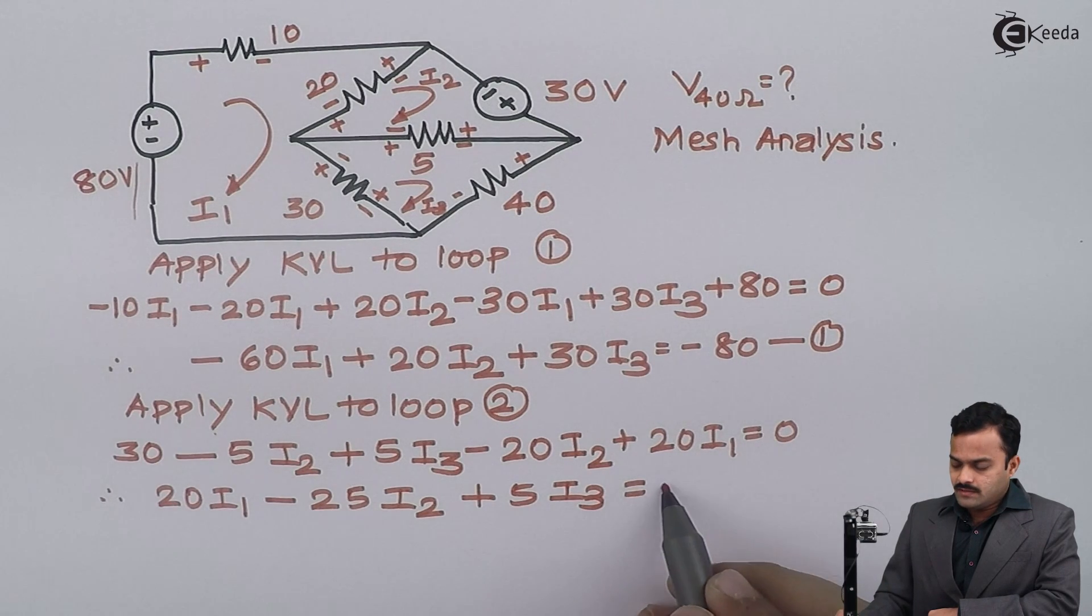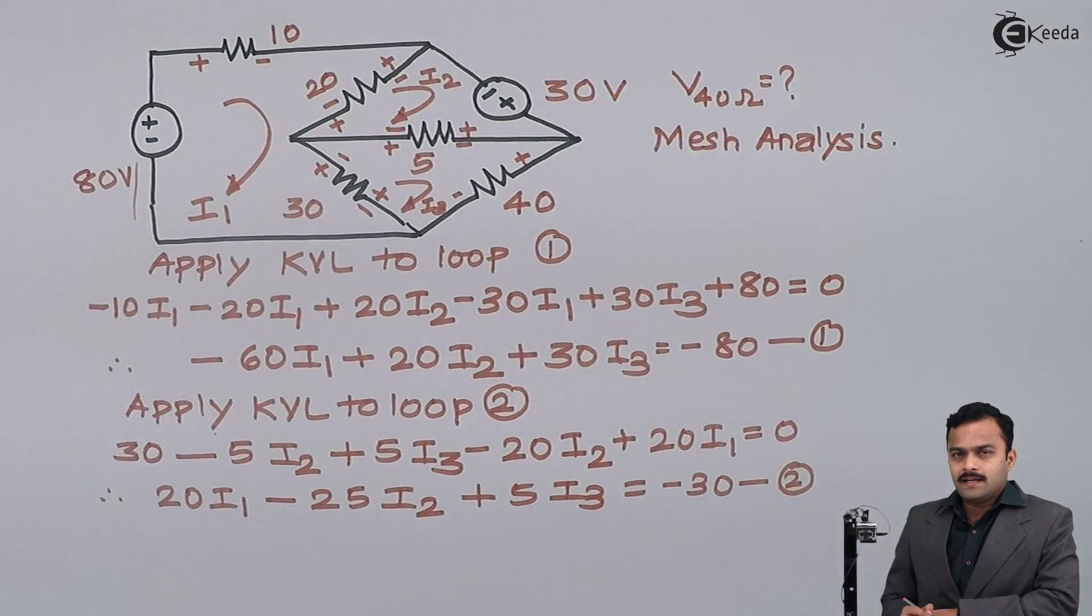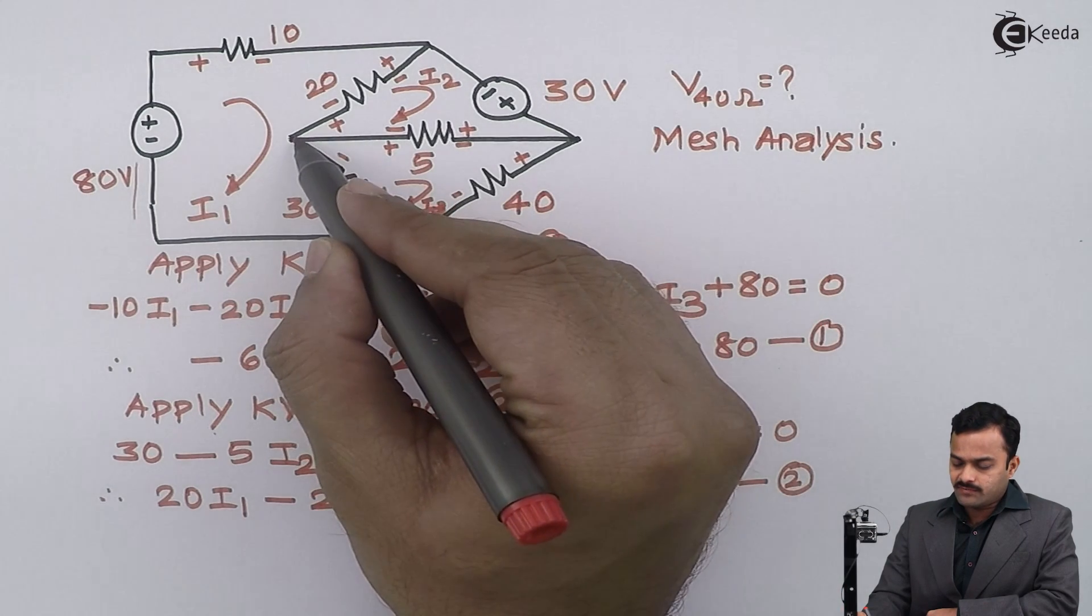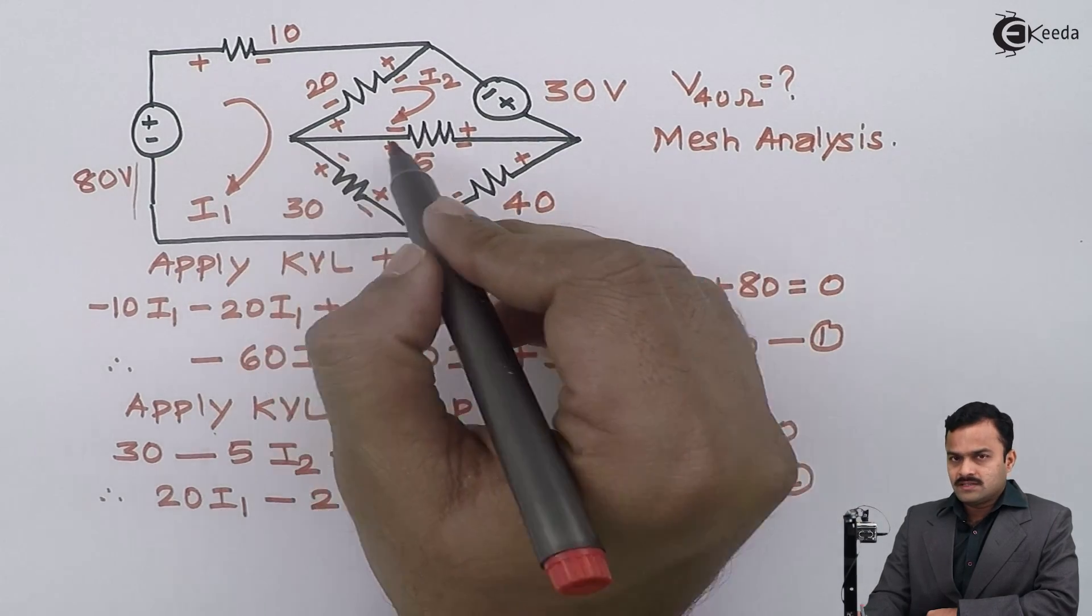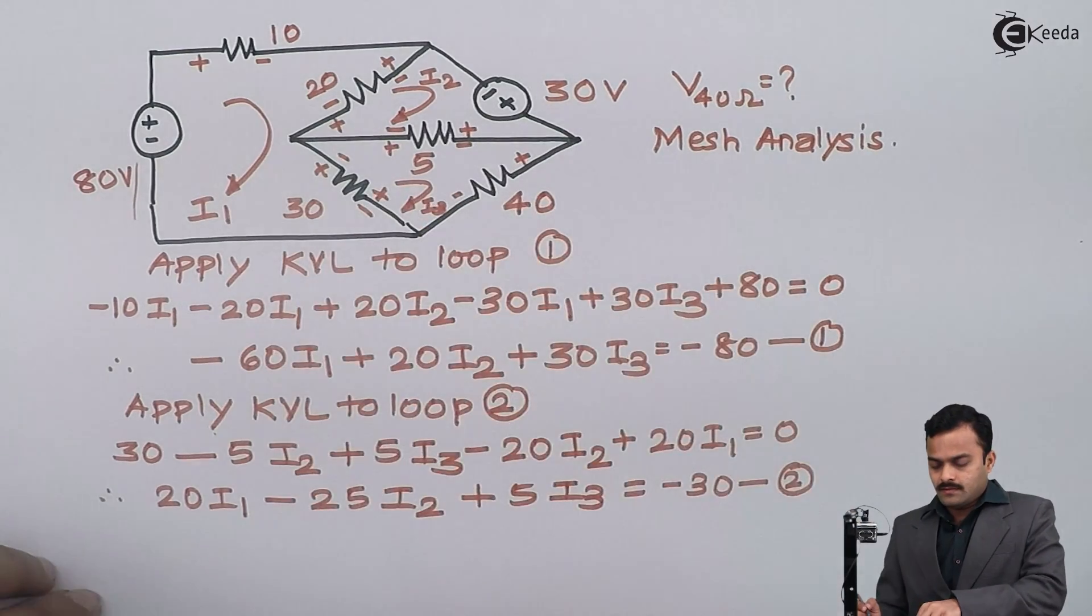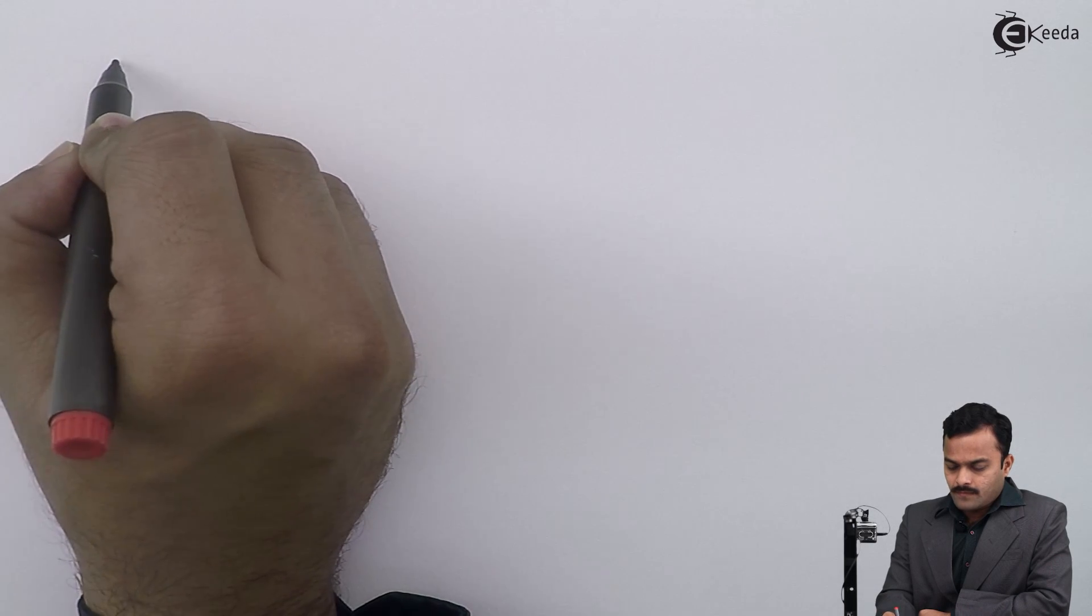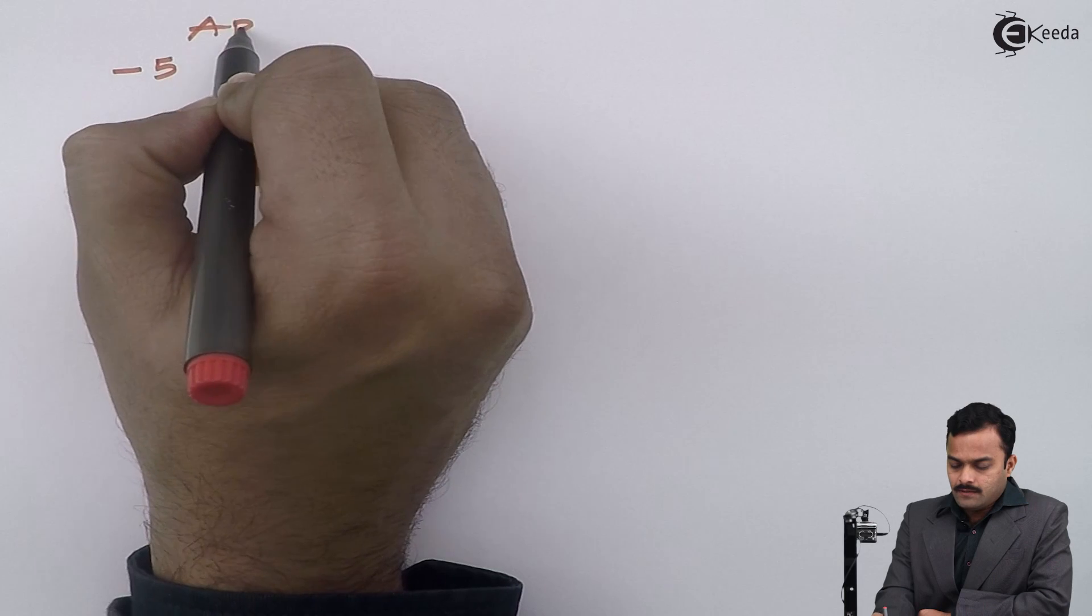Similarly, I can apply KVL to loop number 3. I will start my discussion from this point and tracing this path, I will have 3 voltage drops and 2 voltage rises. So let's see.